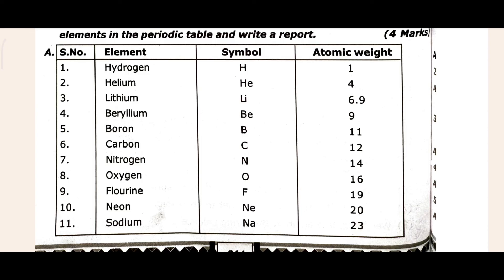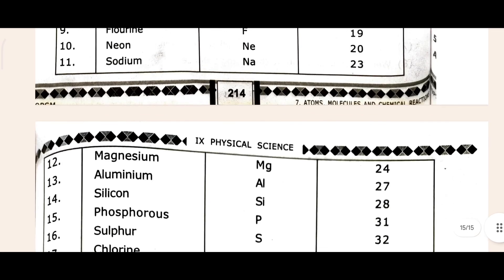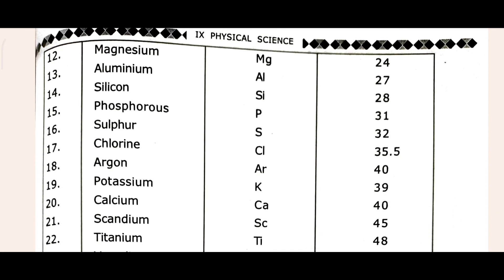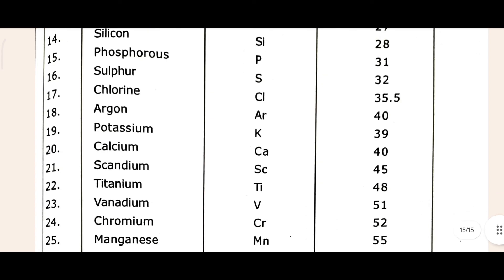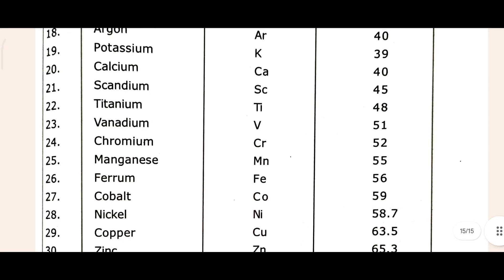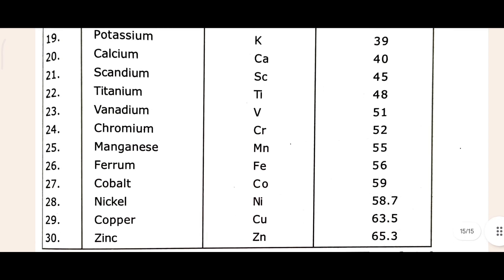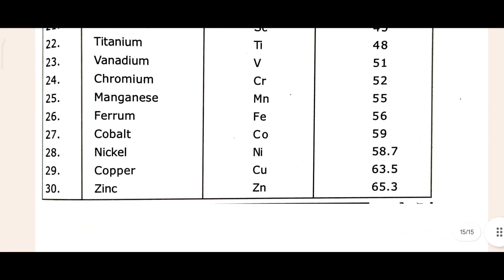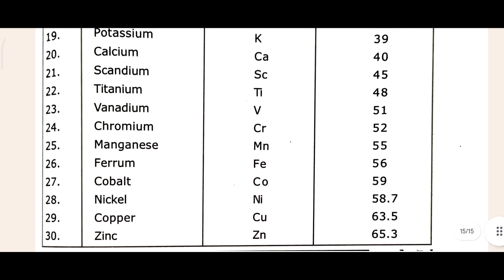Come to the Suggested Project Work section. This is the project work and this is the answer. The list of 13 elements includes: magnesium, aluminium, silicon, phosphorus, sulfur, chlorine, argon, potassium, calcium, scandium, titanium, vanadium, chromium, manganese, ferrum, cobalt, nickel, copper, zinc. Project work is also completed. In this chapter, all question answers, keywords, key points, project work, experiment, and higher thinking questions - everything in Chapter 7 is totally completed. We will meet in the next video, Jai Hind!